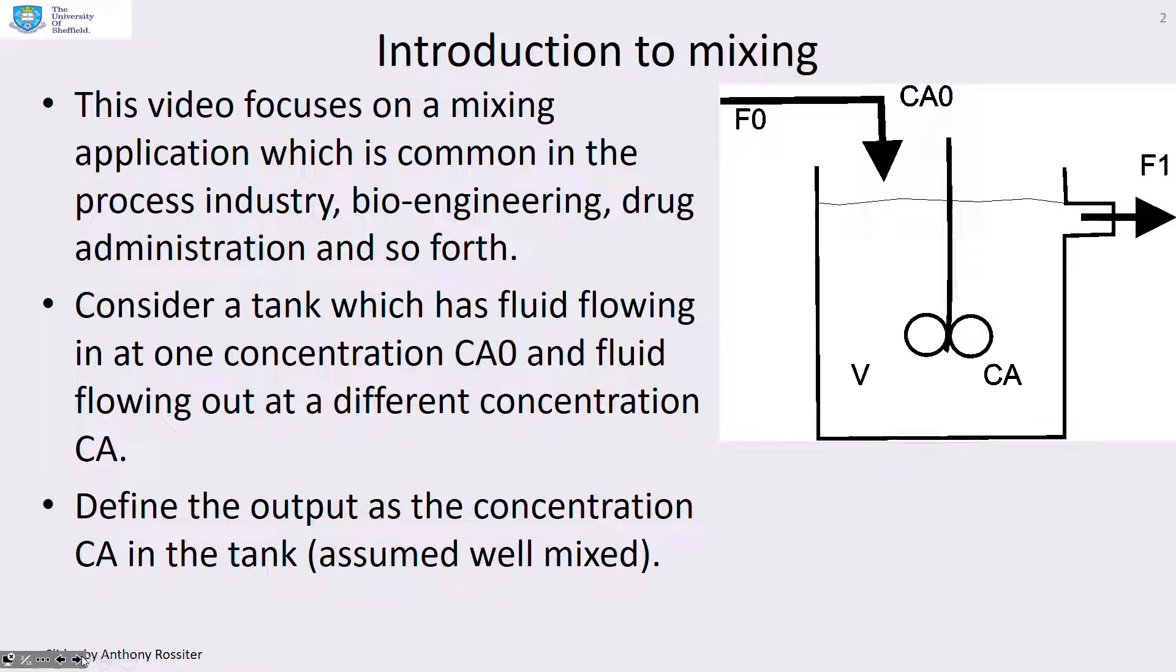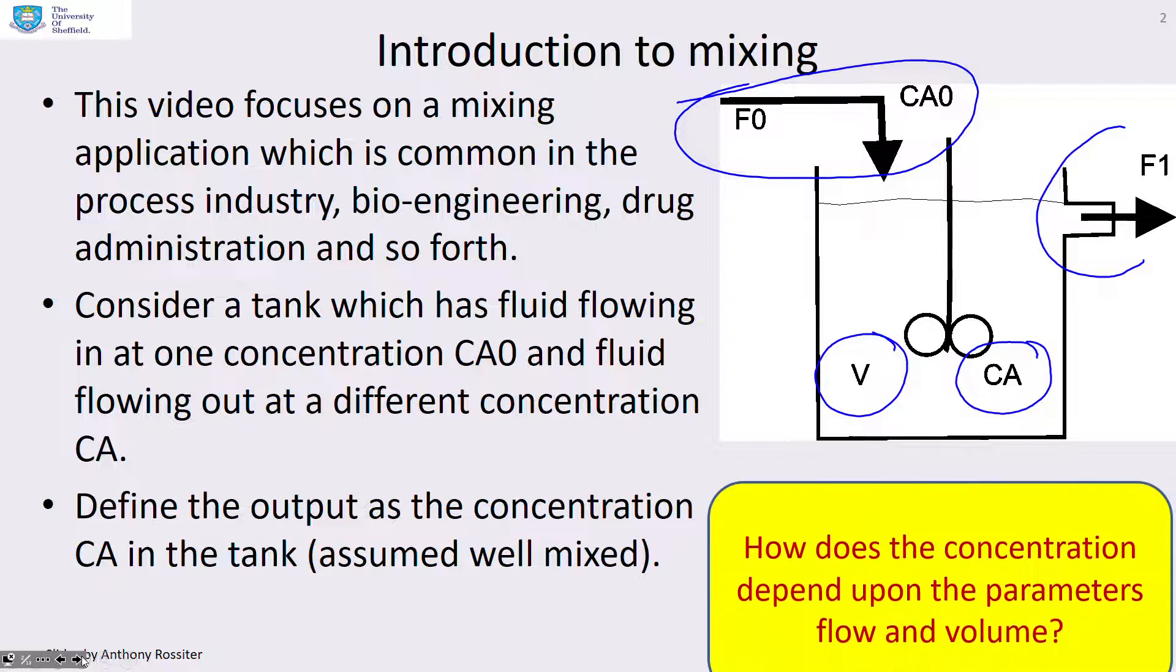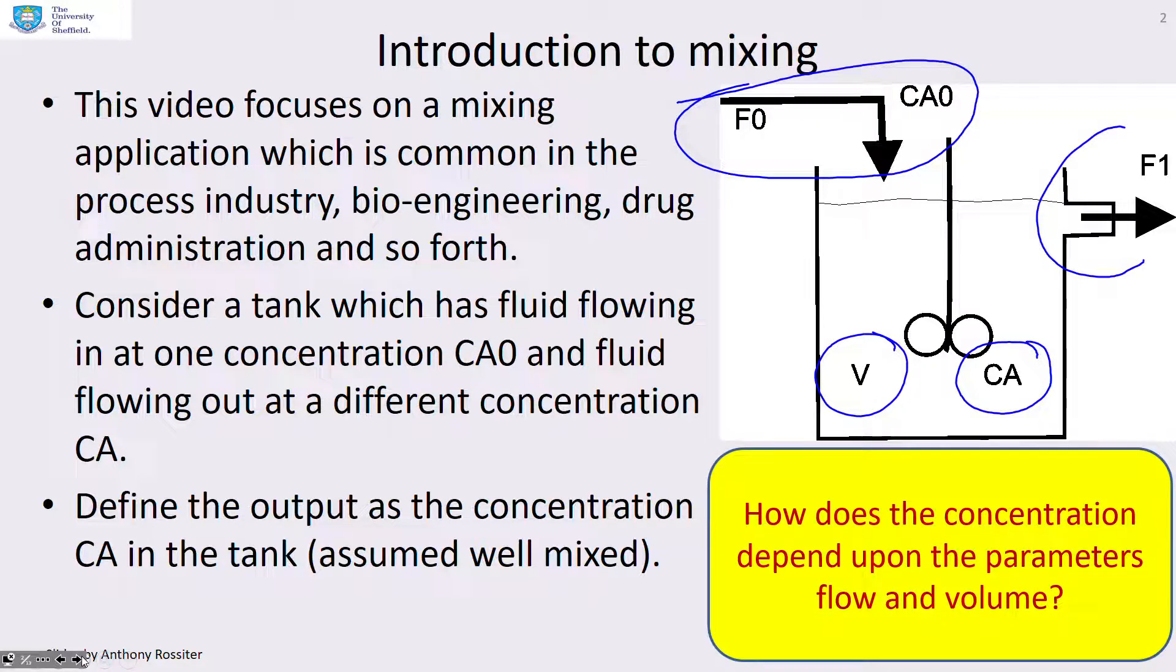We're going to consider a tank a bit like this one here. We've got a flow coming into the tank with a flow rate F0 and a concentration Ca0, and we've got a flow going out with a flow rate F1. The concentration in the tank is Ca, the volume is V, and we're going to assume that the tank is well mixed. Our question is how does the concentration in the tank depend upon the parameters flow and volume?